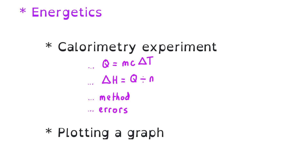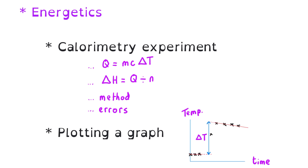There wasn't anything from energetics on Paper 1, and so that means this could be a big feature of Paper 2. We could have a calorimetry experiment related question — maybe calculating the energy change in a reaction and from there calculating the enthalpy change. Or it could be qualitative, perhaps writing a method for an experiment or looking at somebody else's method and pointing out errors. There haven't been graph questions so far on Paper 1, so one is more likely to come up on Paper 2. In energetics, that could be a calorimetry graph where you extrapolate from two best fit lines and use that graph to work out a value for ΔT.